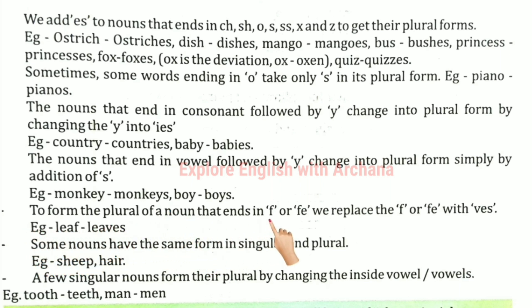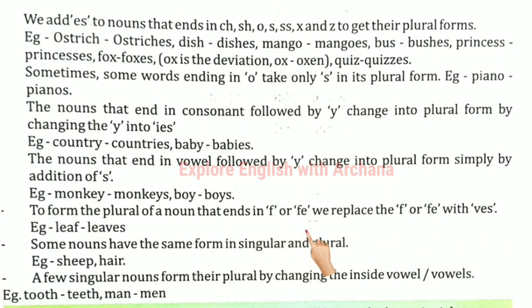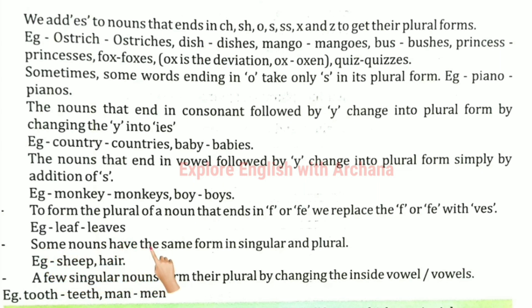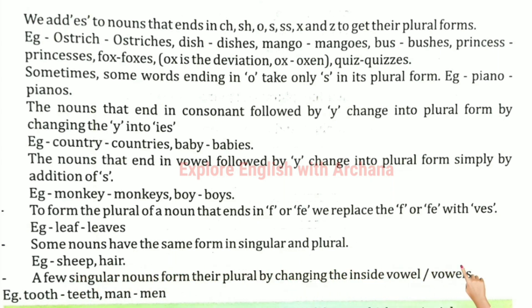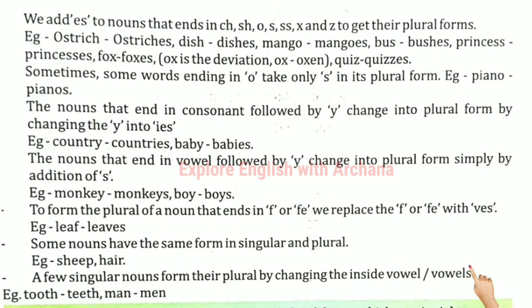To form the plural of a noun that ends in f or fe, we replace the f or fe with -ves. For example: leaf → leaves. Some nouns have the same form in both singular and plural. A few singular nouns form their plural by changing the inside vowels — for example: tooth → teeth.